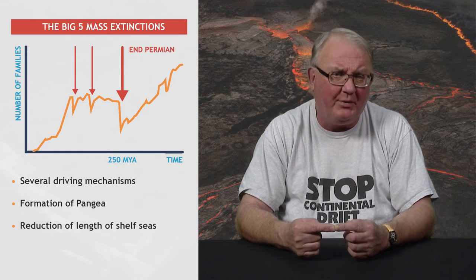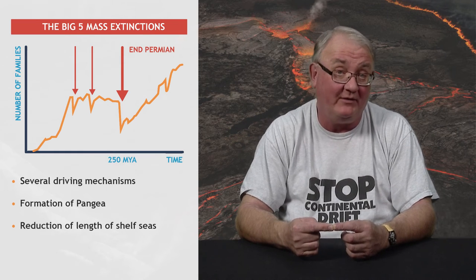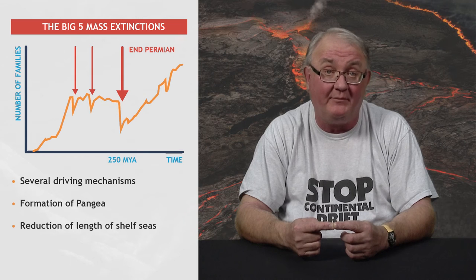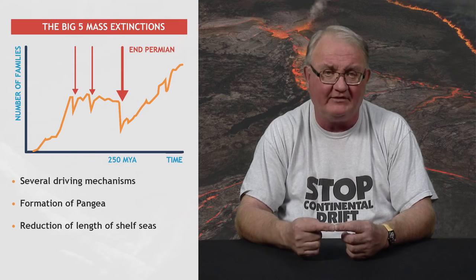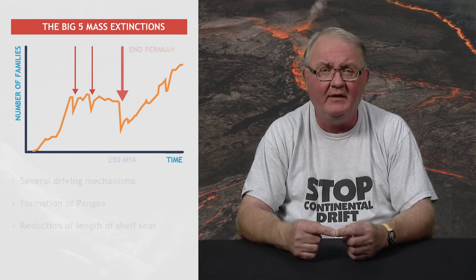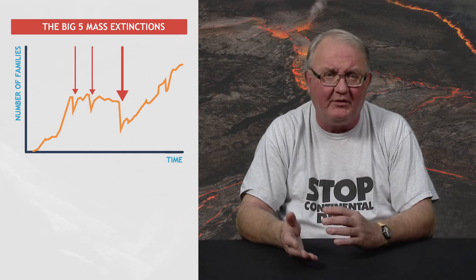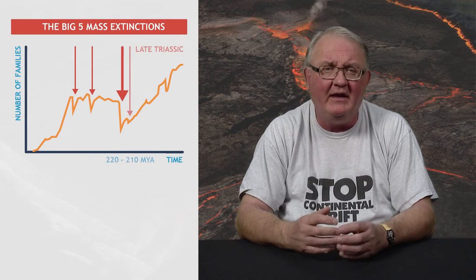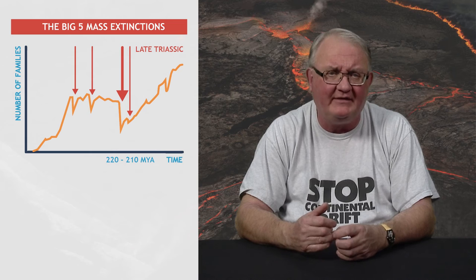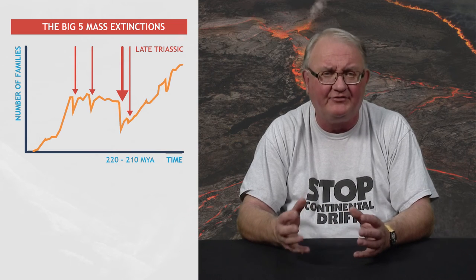Further, many Permo-Triassic deposits are desert red beds in which paleontological evidence, either body or trace fossils, is rare, thus making recognition of the precise pattern of extinction difficult. The late Triassic extinction, between about 220 and 210 million years ago, is again difficult to precisely identify and seems to have been a period of high extinction rates.